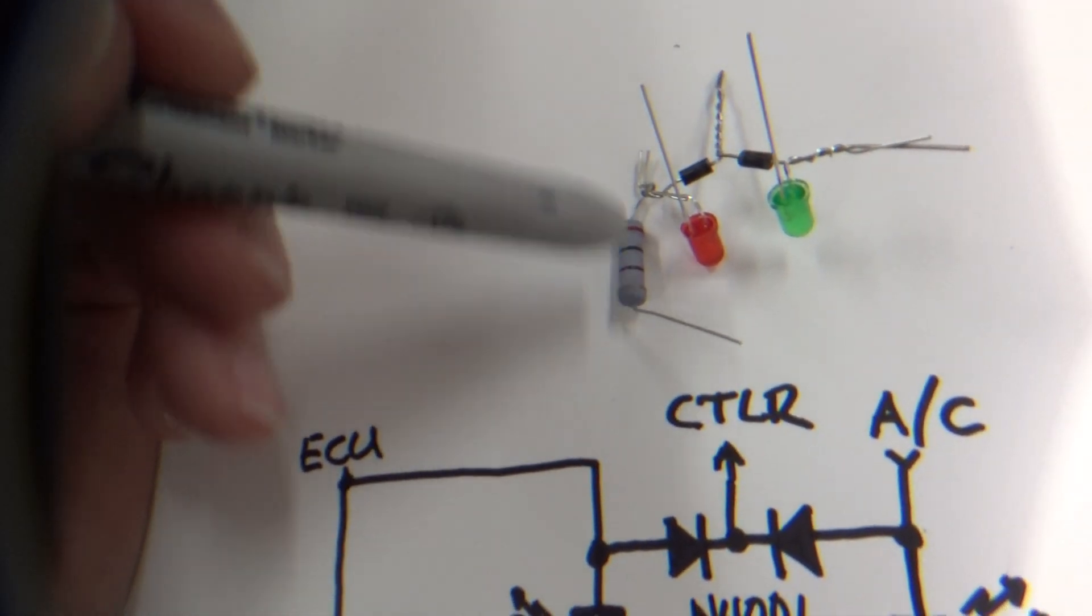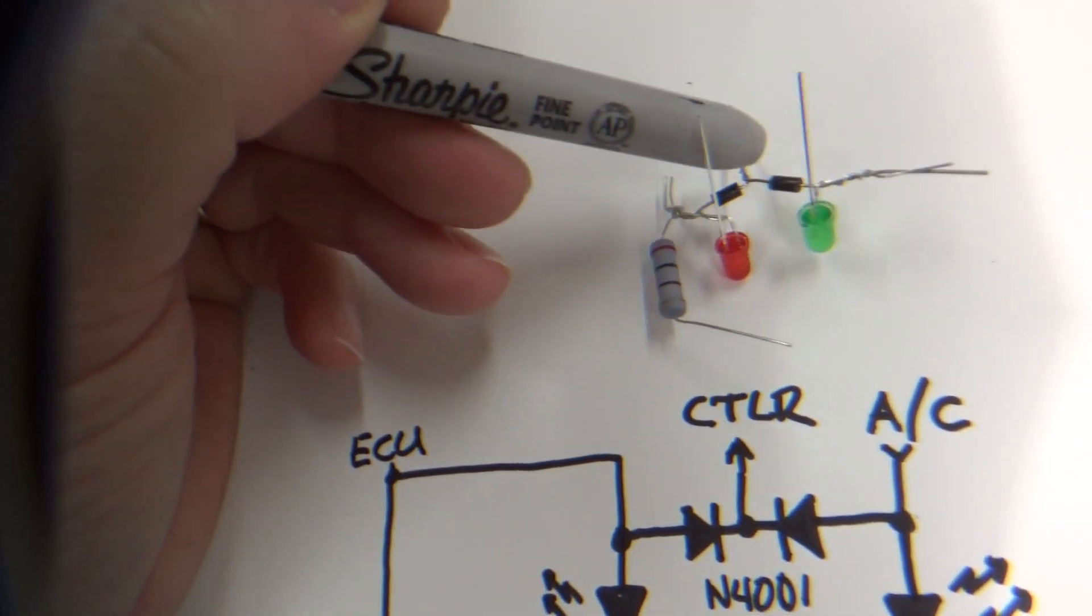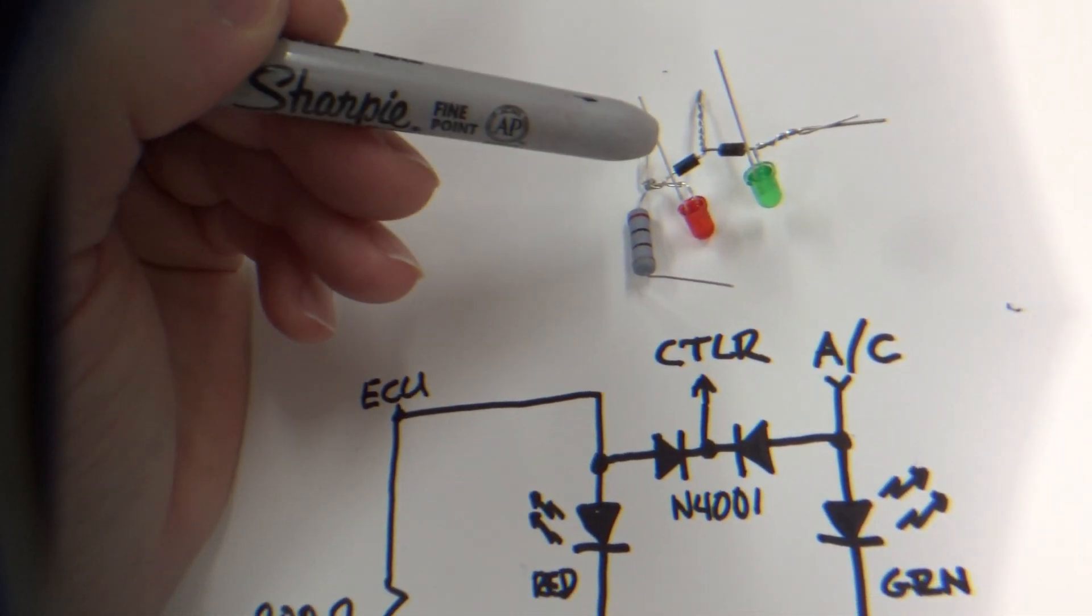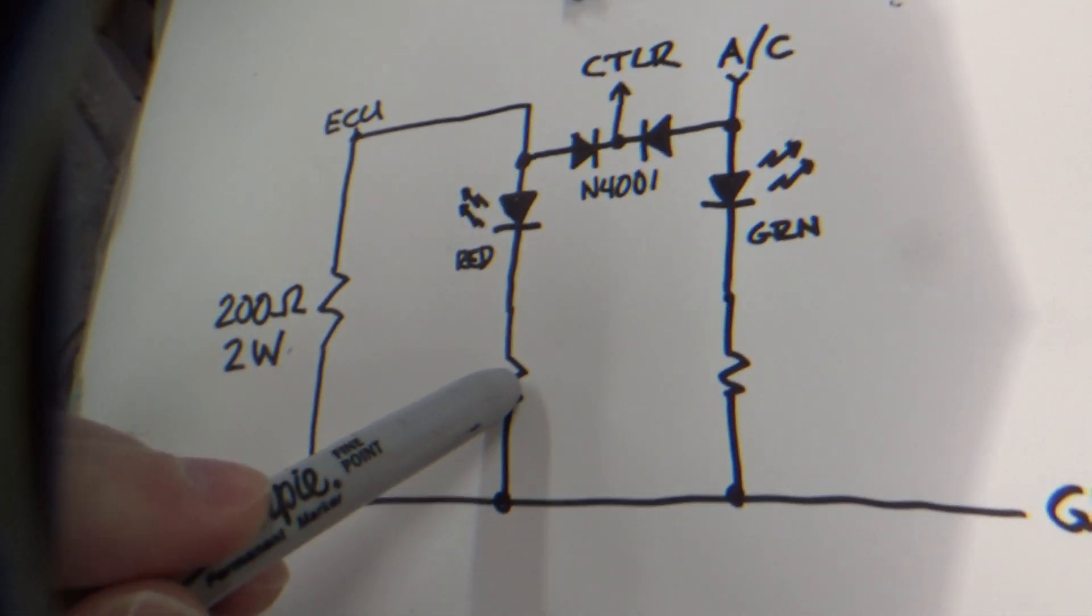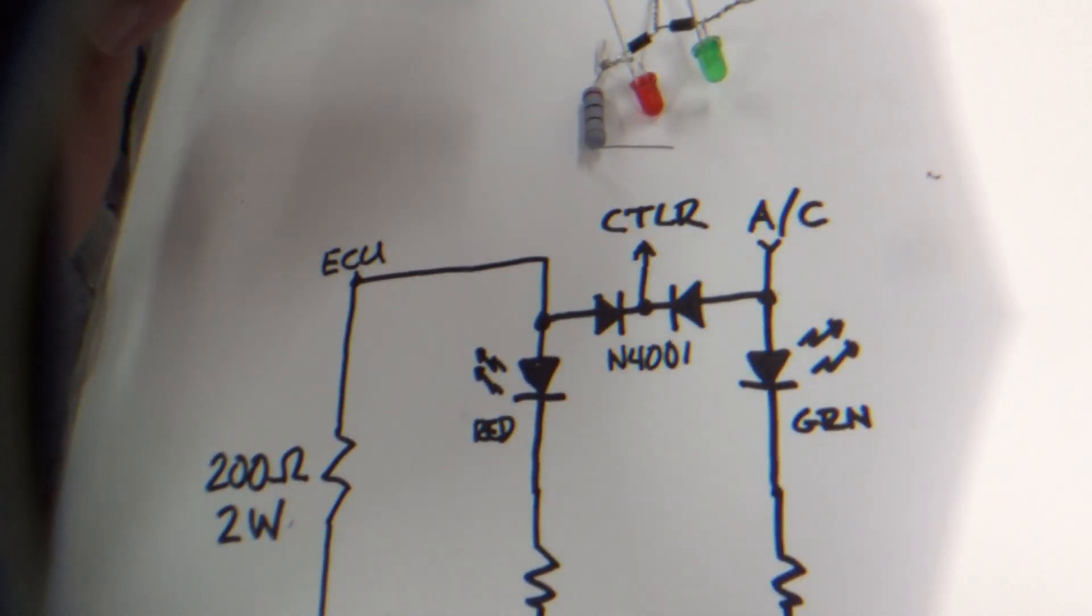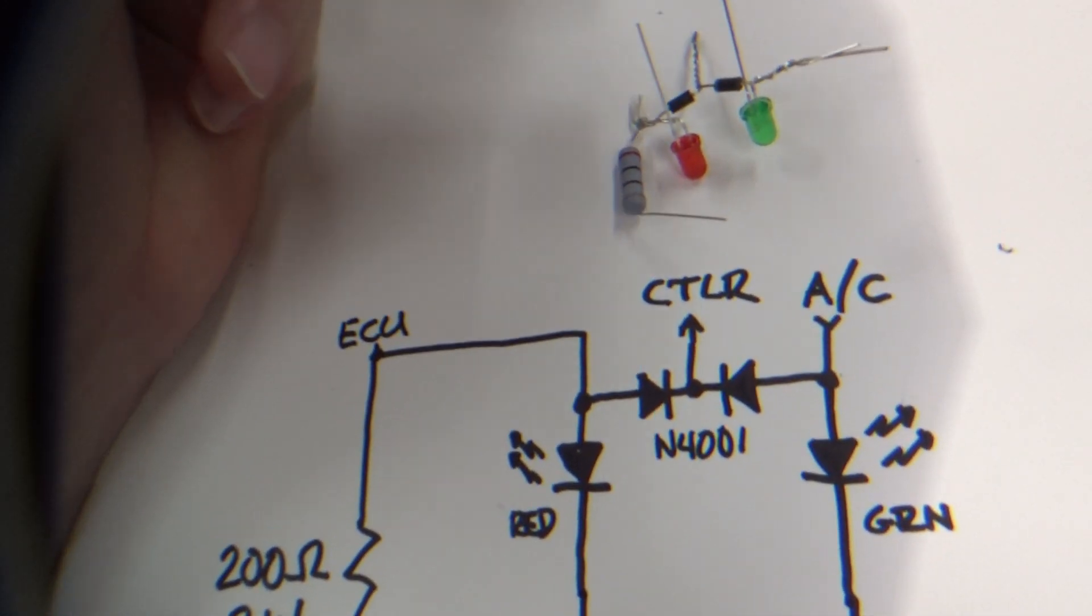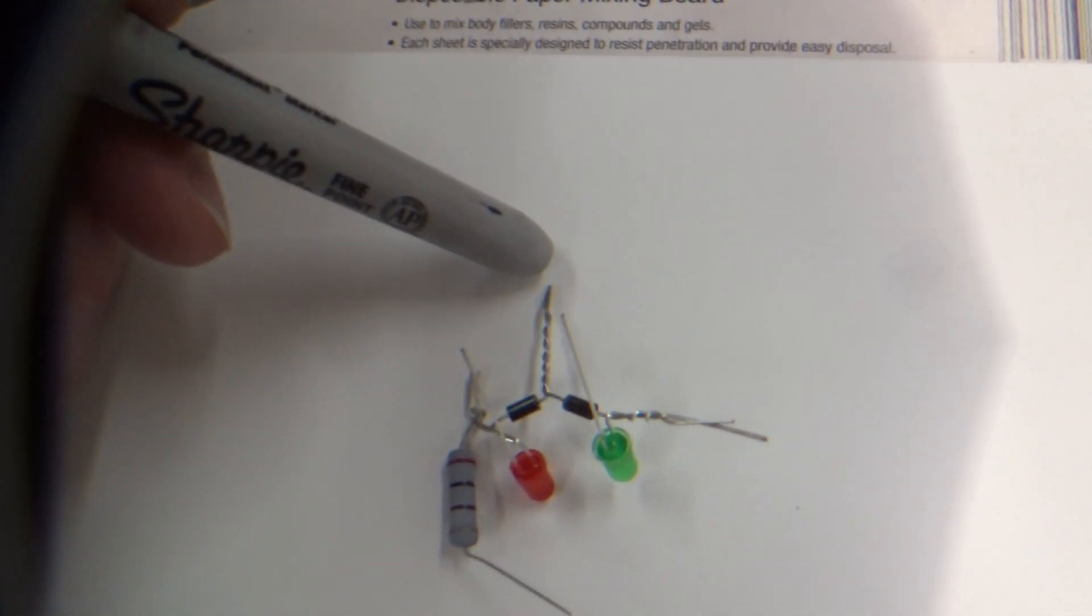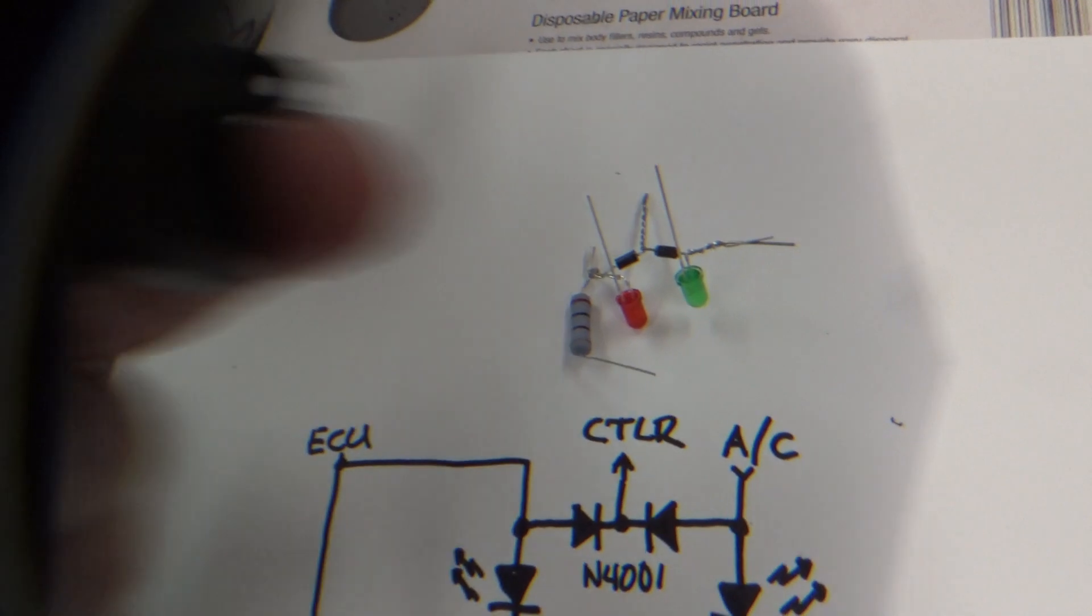I started trying to slap this together a couple weeks ago and never finished it. Here's the 200 ohm resistor in the ground line, these are the two LEDs, these are the two 4001 diodes. I need to put the resistors in here across these. This is the ECU wire, this is the AC wire, and that's the controller wire going out.